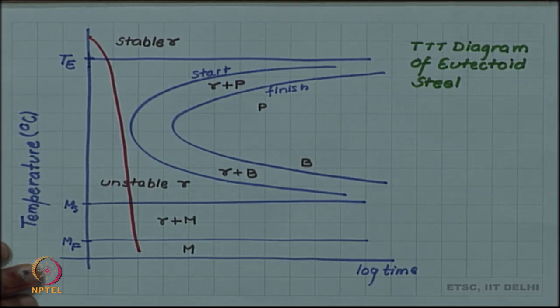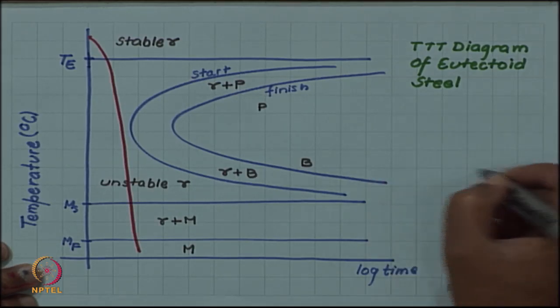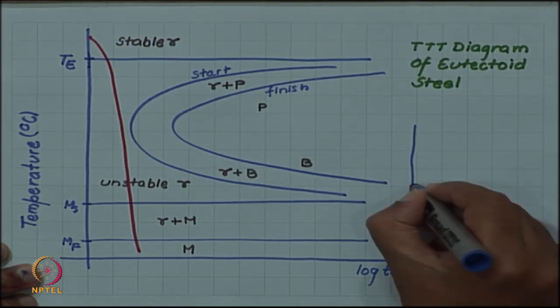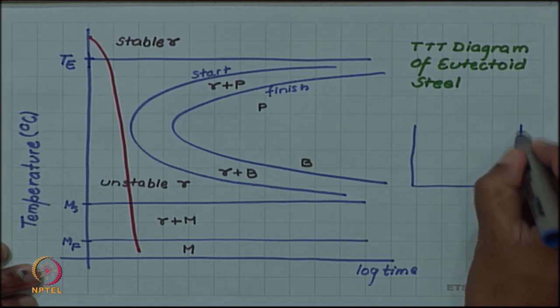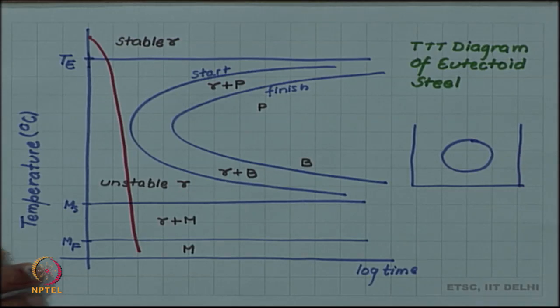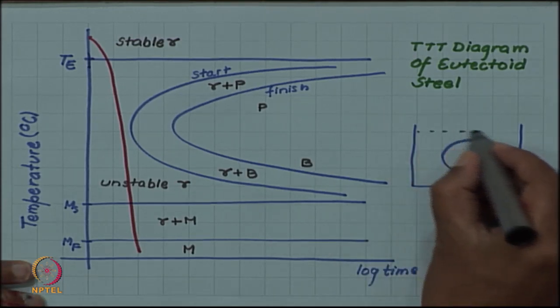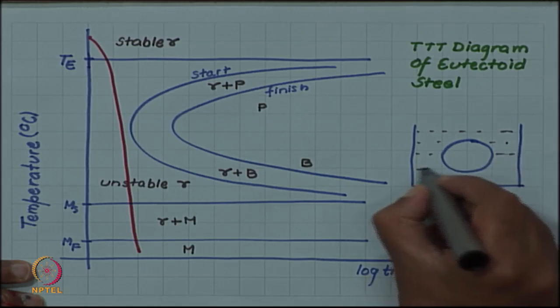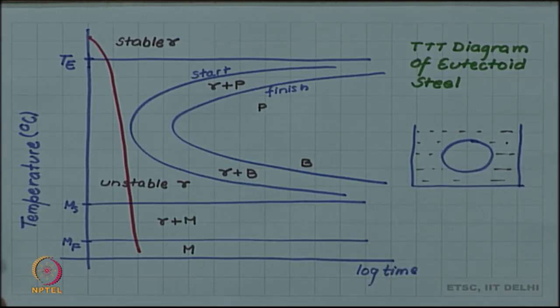But note that if a large object is being quenched, if the component size is large, then all of it will not come to the quench end temperature or all of it will not cool at the same rate. The surface will cool much faster than the inside.